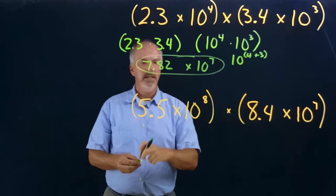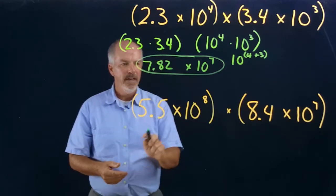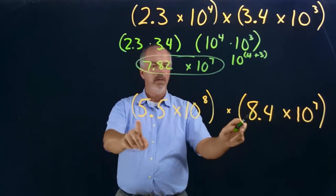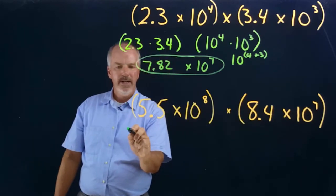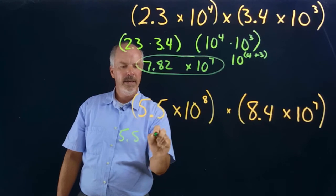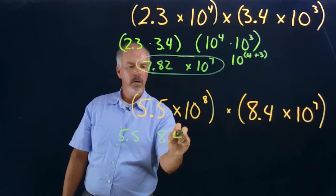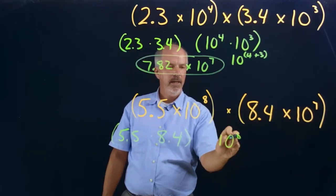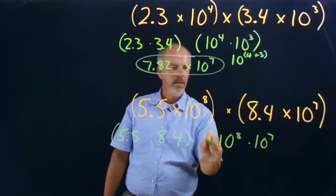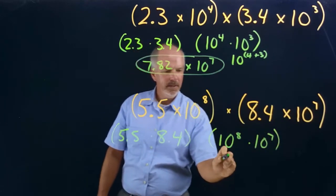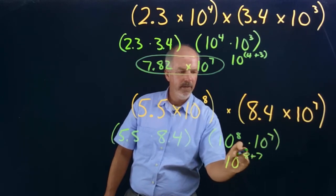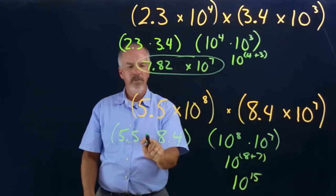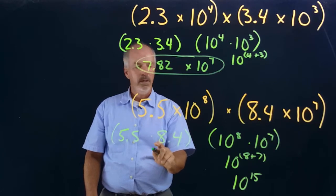Let's look at another multiplication example: 5.5 times 10 to the eighth times 8.4 times 10 to the seventh. Again, we multiply our coefficients: 5.5 times 8.4, and then we multiply our powers of 10: 10 to the eighth times 10 to the seventh. That becomes 10 to the 8 plus 7, which is 10 to the 15th.